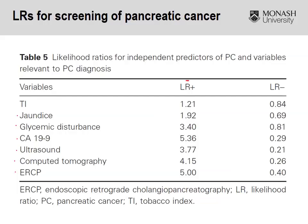We've got the positive likelihood ratios and the negative likelihood ratios displayed. Just by eyeballing it, you can see the first two are fairly close to one, so on their own they're not the greatest tests to rule in or rule out pancreatic cancer. The blood test looks good, giving a fairly good indicator with a positive likelihood ratio of 5 and a negative likelihood ratio of 0.29. Similarly for ultrasound, CT, and endoscopy.